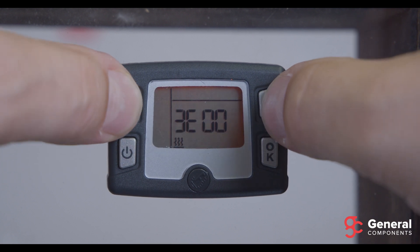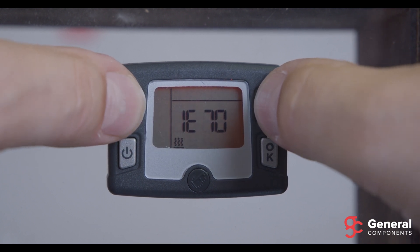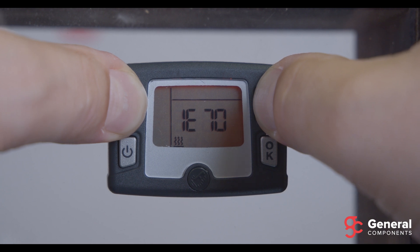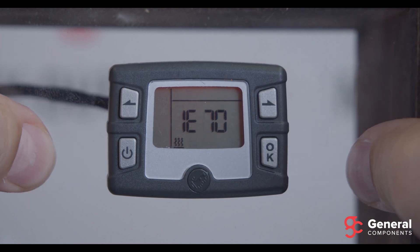To clear the fault codes on the ECU, while inside the fault code screen, simply press and hold both arrow keys at the same time and it will clear all of the fault codes from the heater. So every fault code goes back to 00.